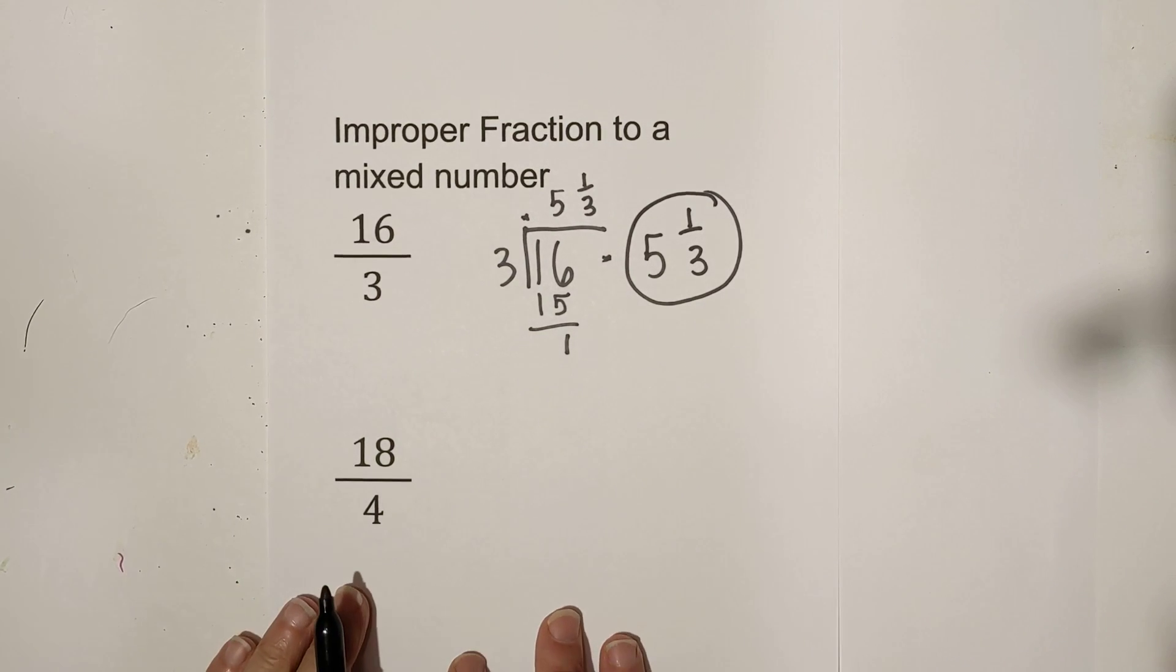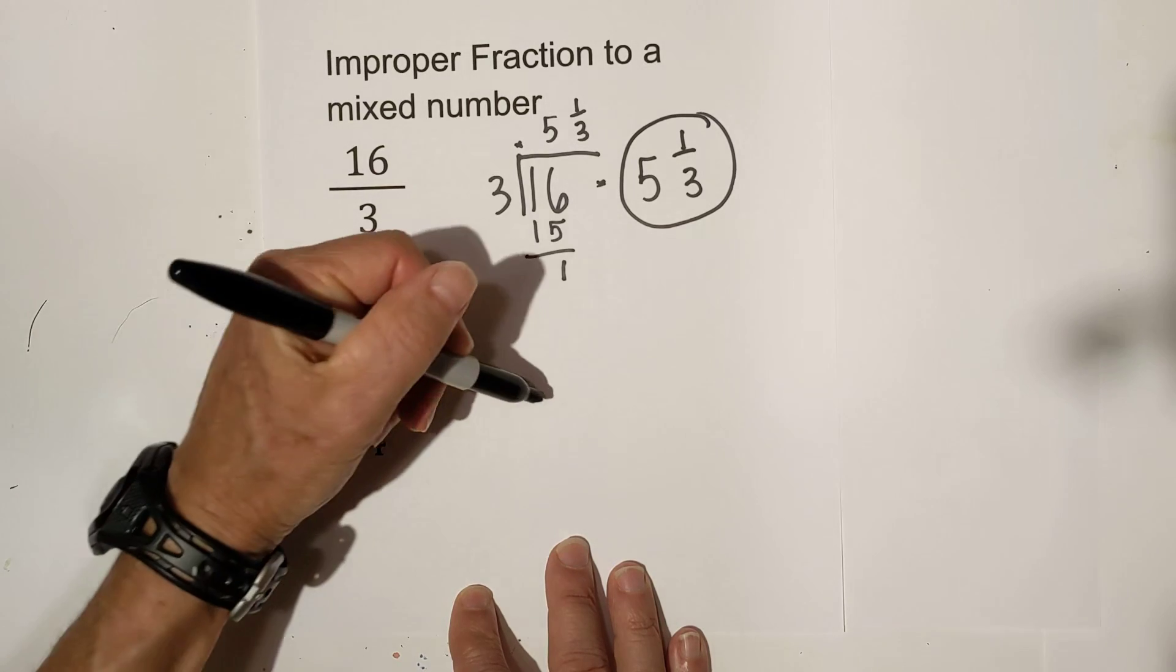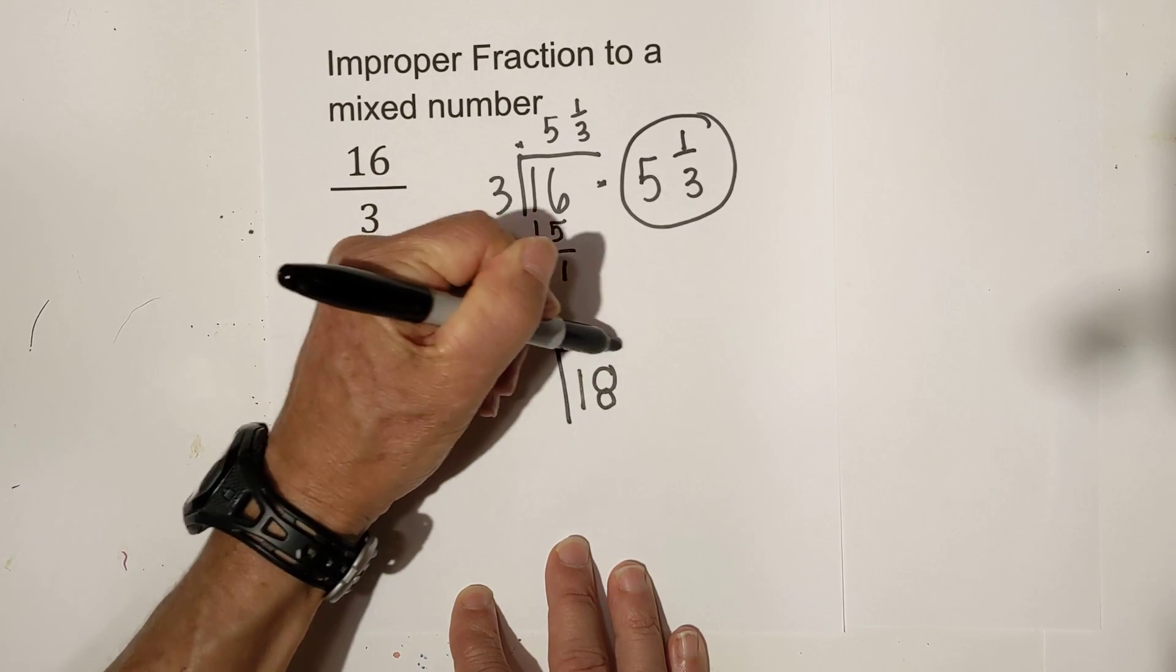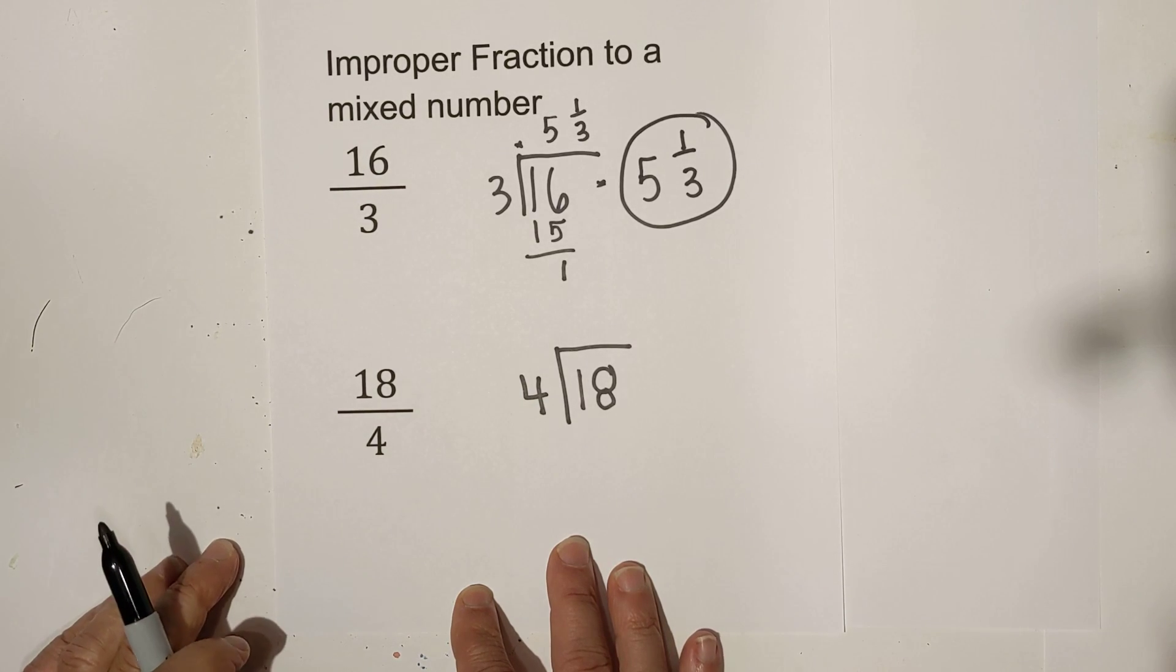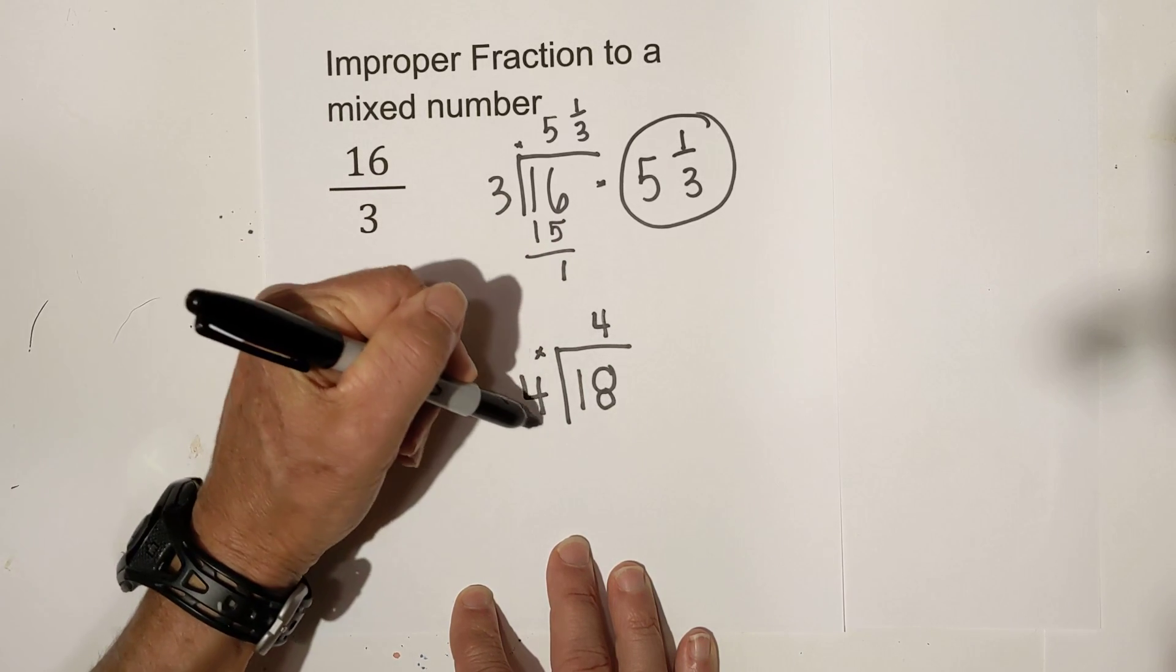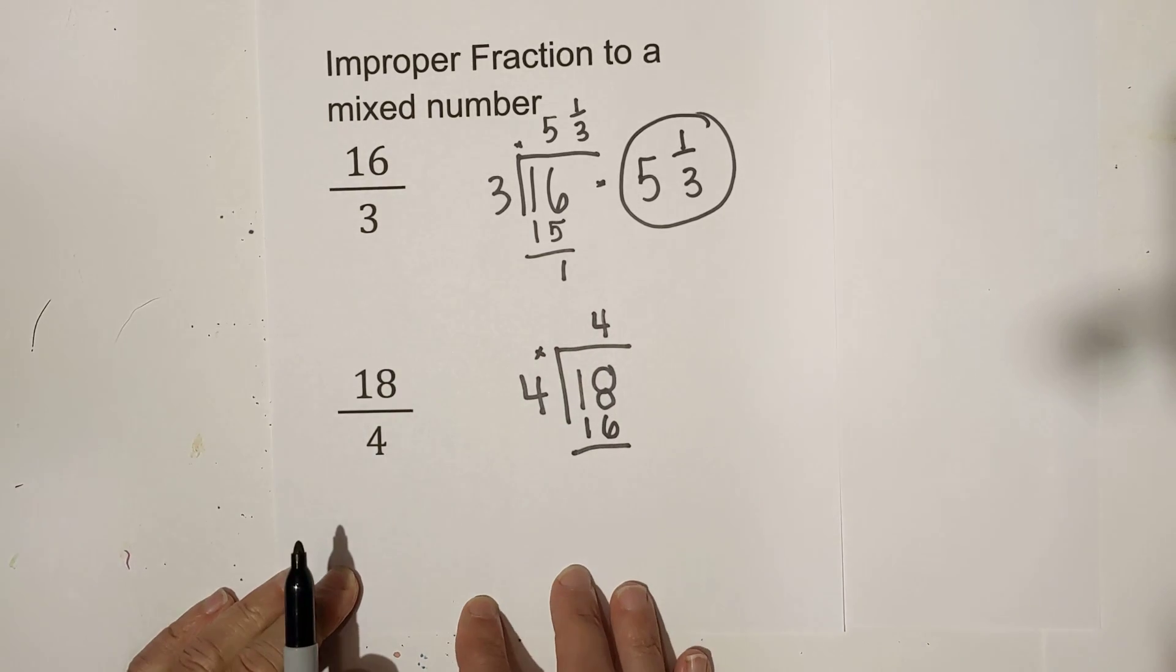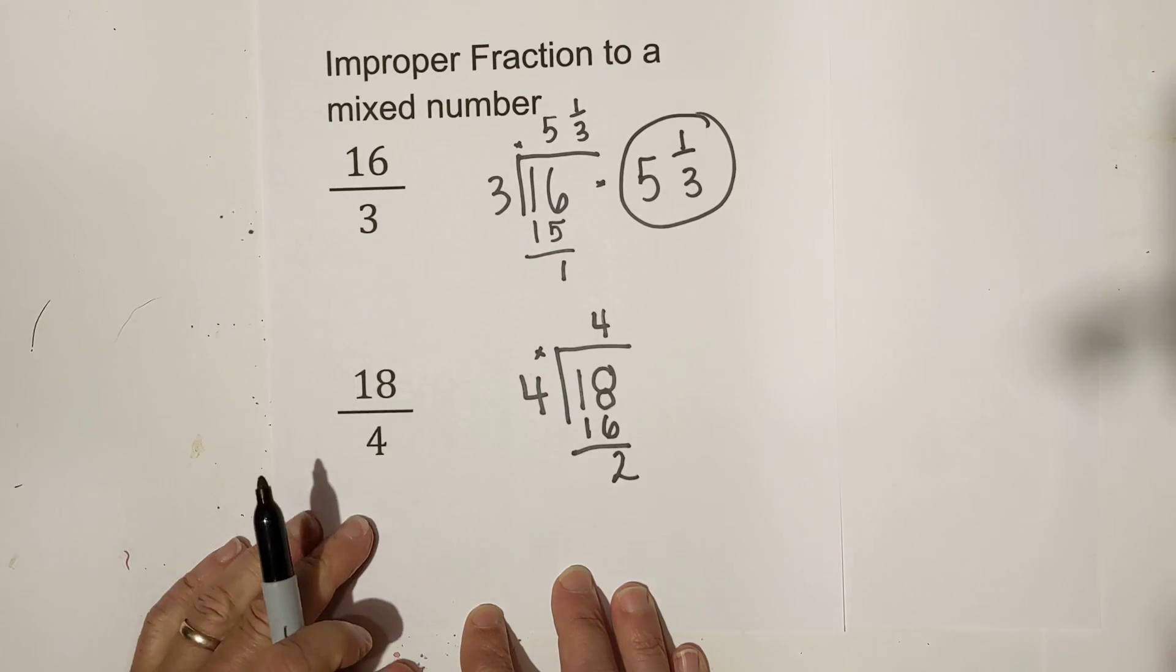Let's work another example. So we have 18 fourths. So I am going to take the top number of the numerator and divide it by the denominator. 4 goes into 18, let's try 4 times, 4 times 4 equals 16, 18 minus 16 is 2.